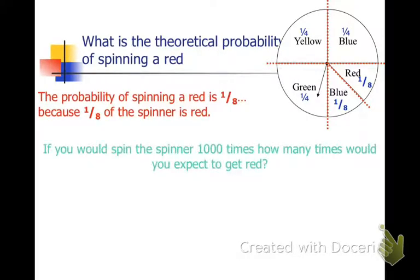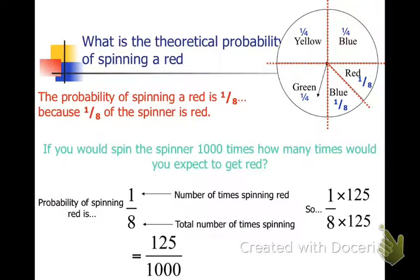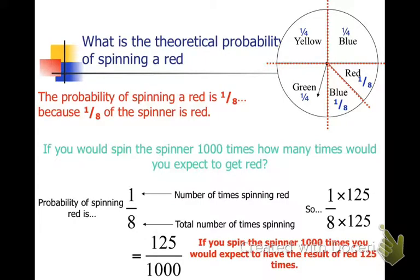Using this information, how many times would you expect to get red out of 1000 times? Again, one-eighth of 1000. And if you change it to a decimal, you see that it is 125 thousandths. So 125 times you would expect red out of 1000 times of spinning.